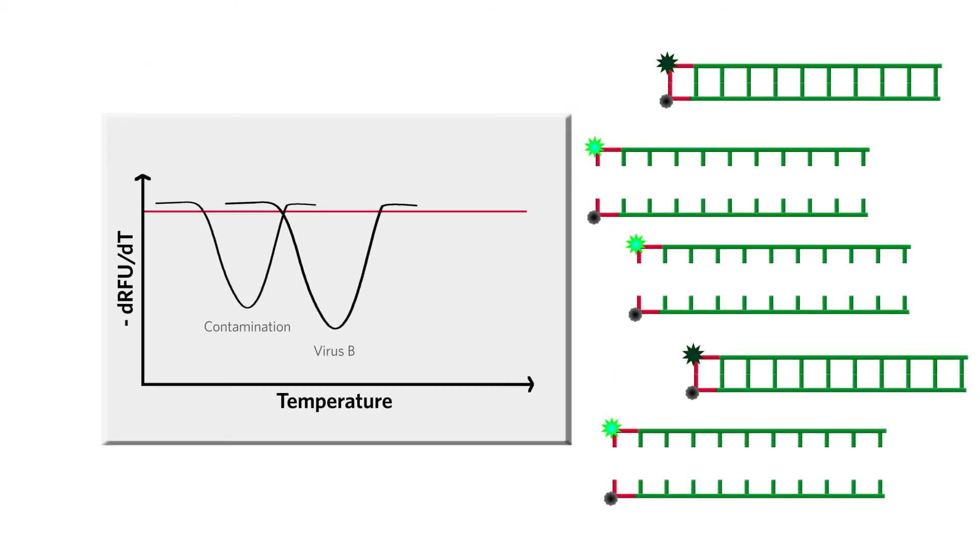This thermal melt curve can act as a quality check. If the curve occurs at an unexpected temperature, something is wrong with the reaction.